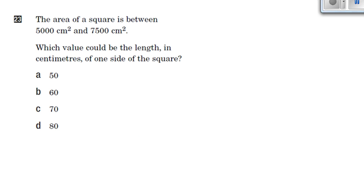Question 23 says the area of a square is between 5000 centimeters squared and 7500 centimeters squared. Which value could be the length in centimeters of one side of the square? This looks like a pretty easy question.